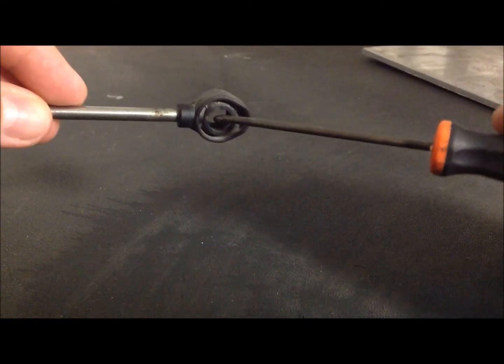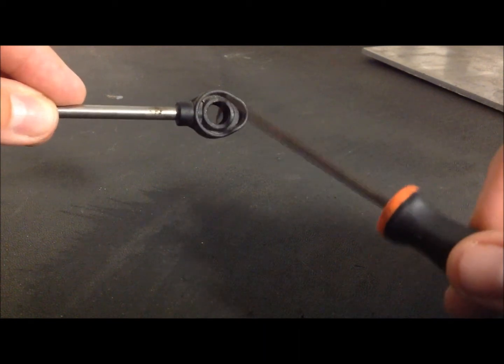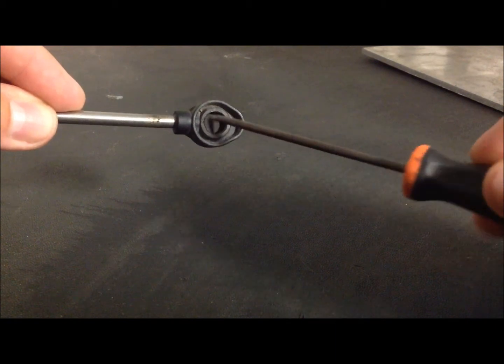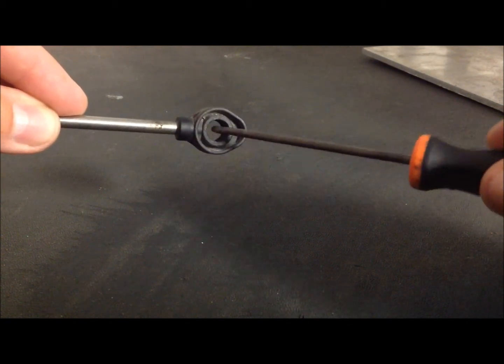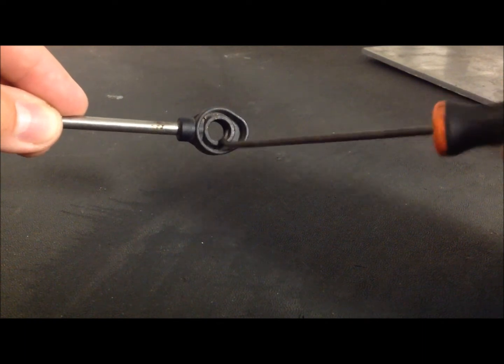Start by removing the old bushing using an angled pick. A pocket screwdriver is helpful as well. Move the pick around in a circular direction and get all the old bushing out. Flip it over and do the same thing until the entirety of that old bushing is out.